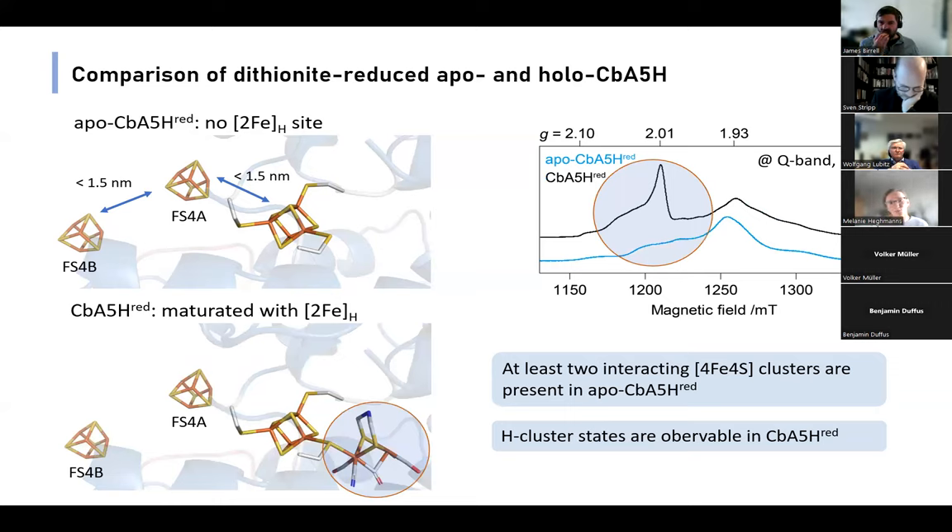When we compare our apo enzyme to the fully maturated holo-CbA5H, which now contains the di-iron subsite and thus a complete and active H-cluster, we see several new signals arising in this region which can be associated with H-cluster states.